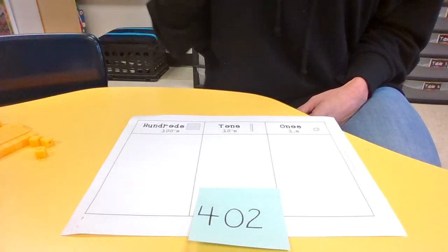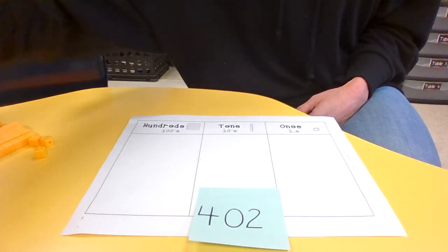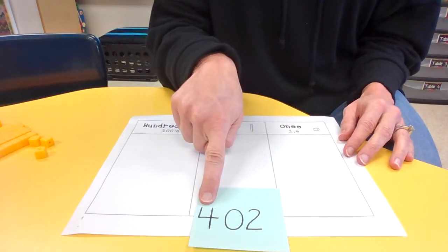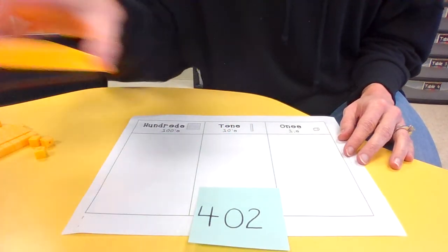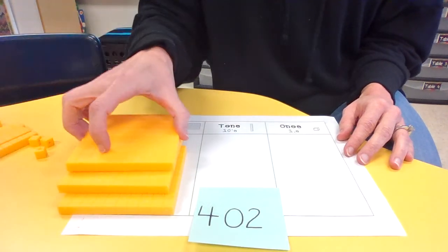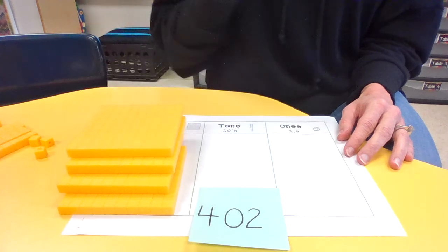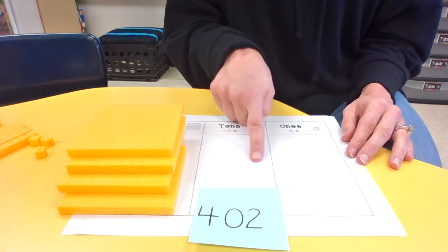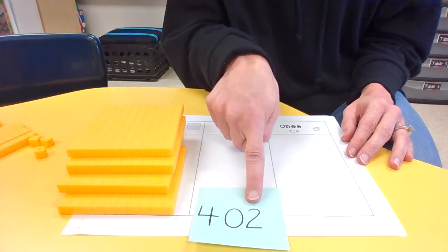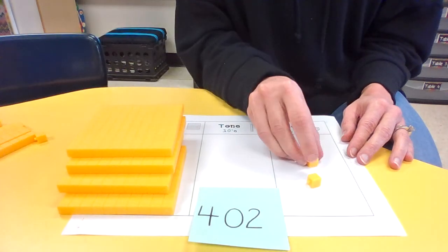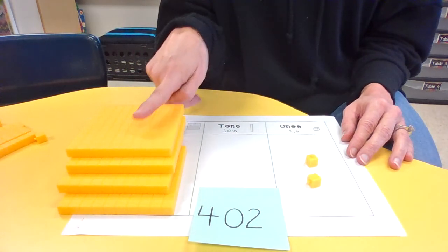Are we ready for the answer? Good. We're going to start in our hundreds place. How many do we need? We need 4 flats. 1, 2, 3, 4. What do we have in our tens place? Do you see anything there? Nope, we're not going to put anything there. We're going to move to our ones place. 1, 2. So that shows 402.